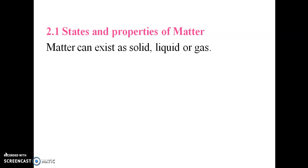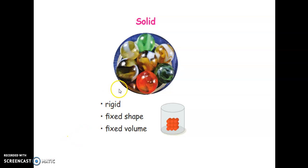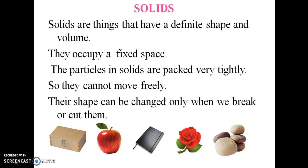Now let's look at states and properties of matter. Matter can exist as solid, liquid, or gas. Solids are rigid and have a fixed shape and fixed volume. Solids are things that have a definite shape and volume. They occupy a fixed space. The particles in solids are packed very tightly.